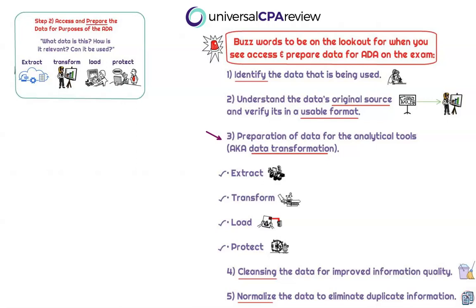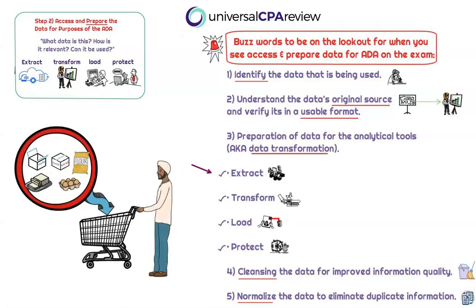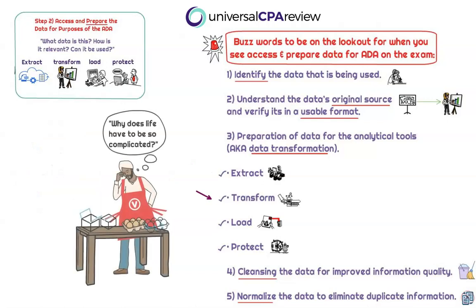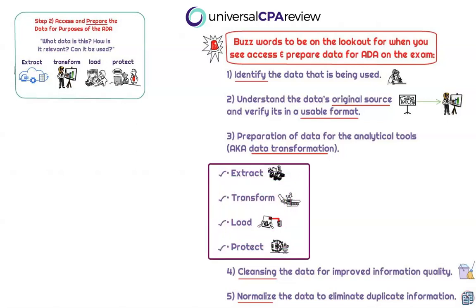Data transformation is literally transforming data, as the word suggests. Here we're not only going to have access to our ingredients for the audit data analytics, we're also going to be preparing it for use. The four steps in data transformation require that we extract, transform, load, and protect — ETLP. We're extracting data from whatever software or source it comes from, in the same way we pull ingredients off the shelves at the grocery store. When we get home, we transform those ingredients into our cake. In the audit process, this data will determine what is usable and what is not, then we load the data into a usable format, and finally we protect this data.